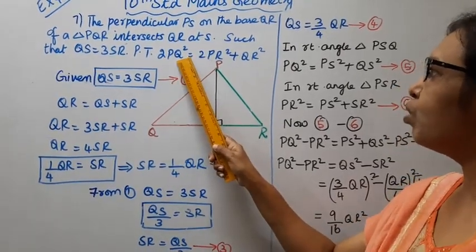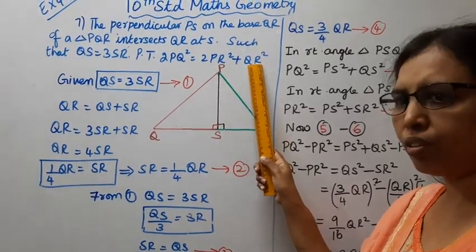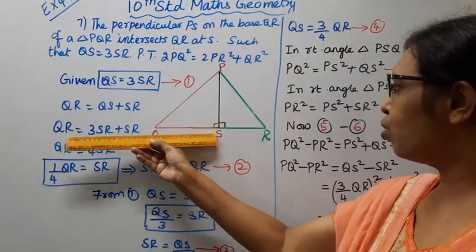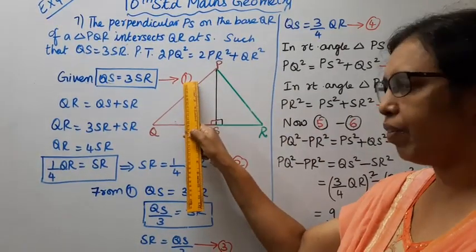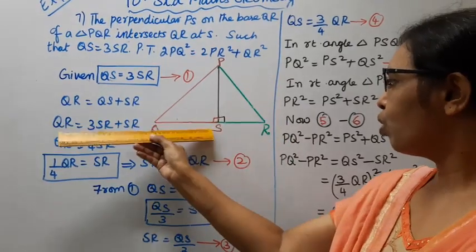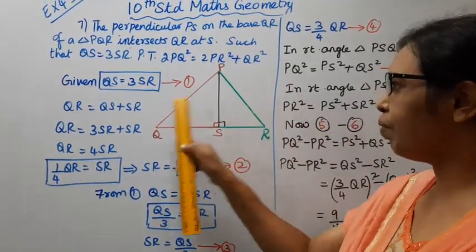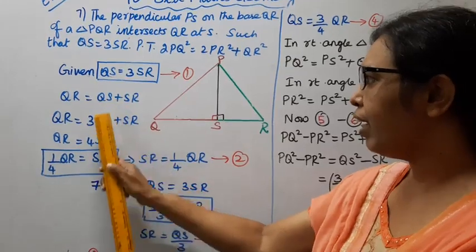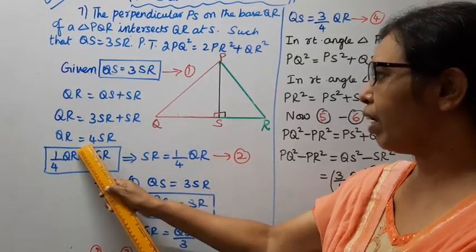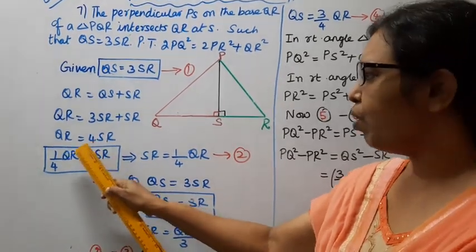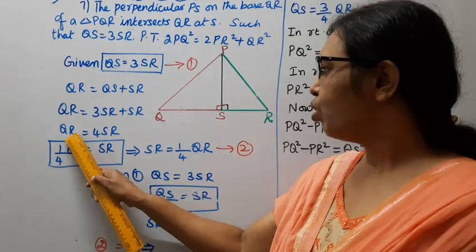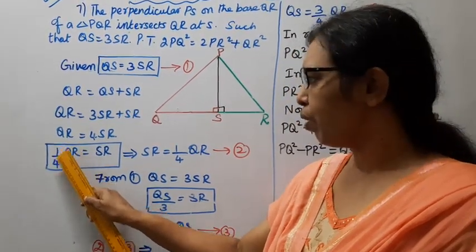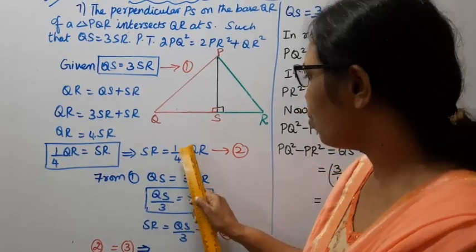Prove that 2PQ square equal to 2PR square plus QR square. We know one hint: QS equal to 3SR. Since QR equals QS plus SR, QR equals 3SR plus SR equals 4SR. Therefore SR equals 1 by 4 QR.